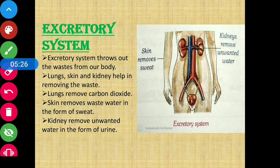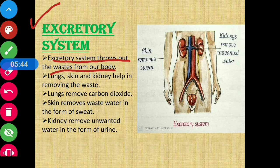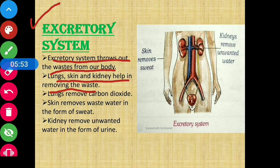Moving on to another organ system — the excretory system. The excretory system throws out the waste from our body. Lungs, skin, and kidneys all help in removing the waste from our body.